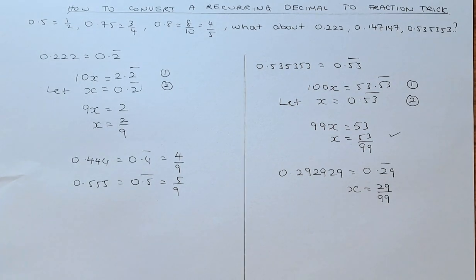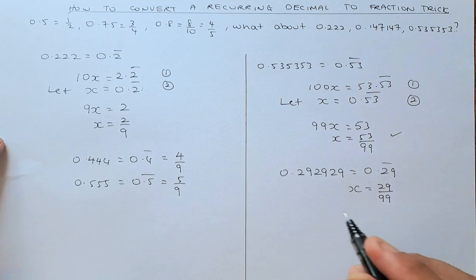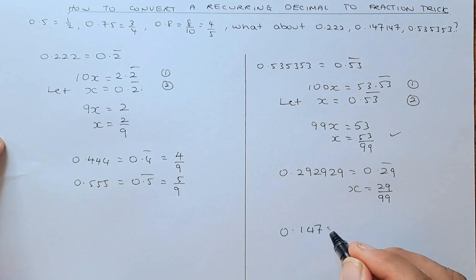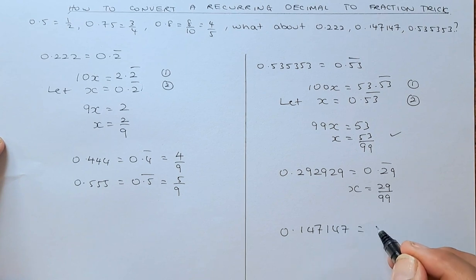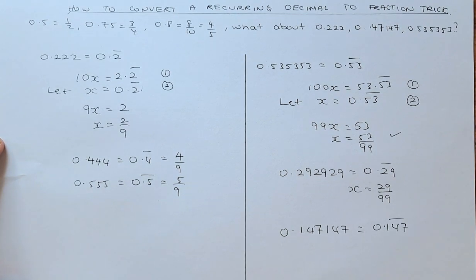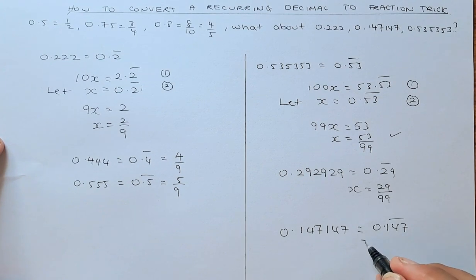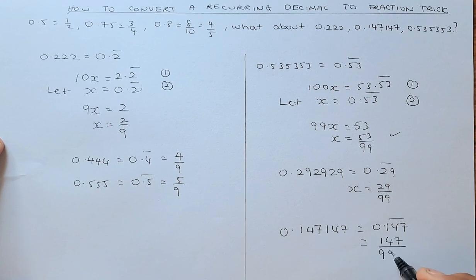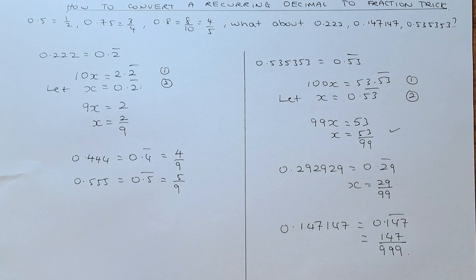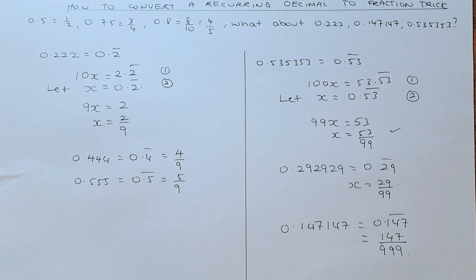So similarly, if you have a 3-digit recurring, 0.147, that can be written as 0.147 recurring. To convert to fraction, is just 147 over 999. So that is how you convert a recurring decimal into fraction.